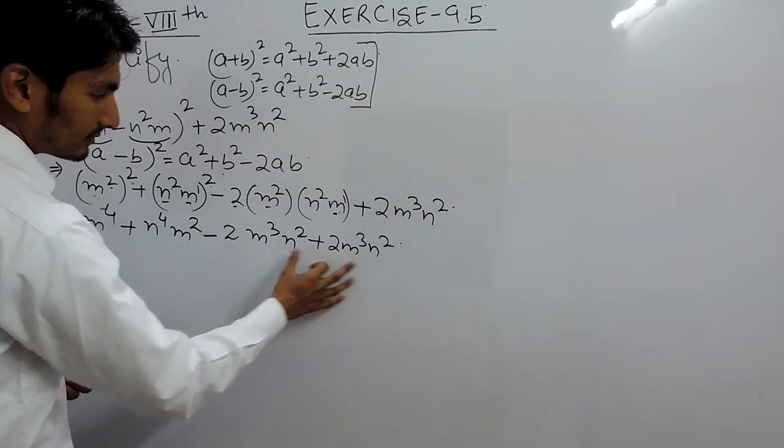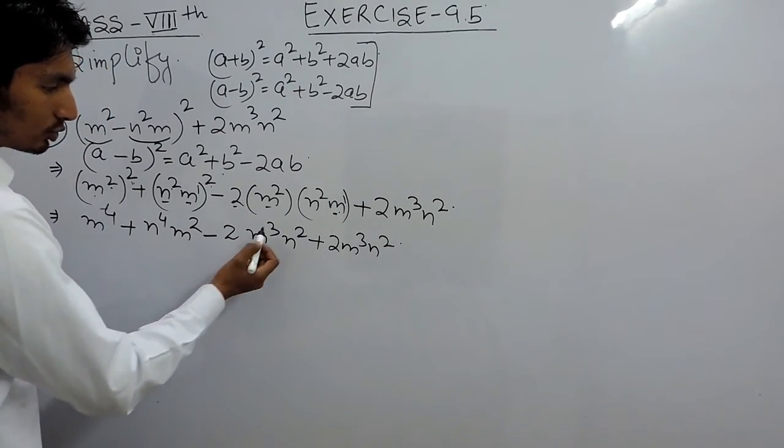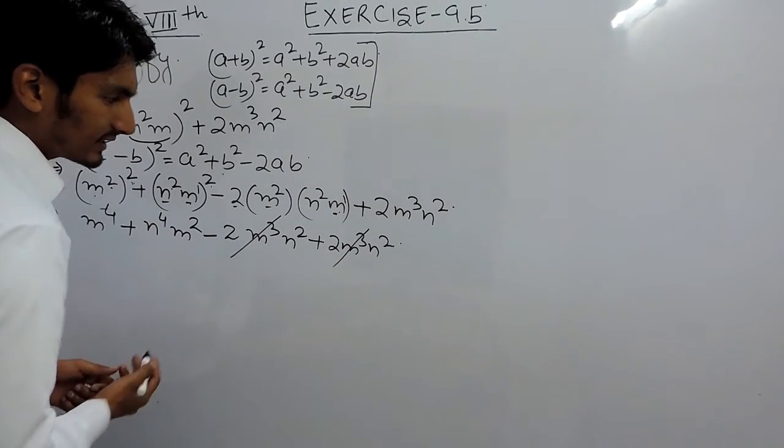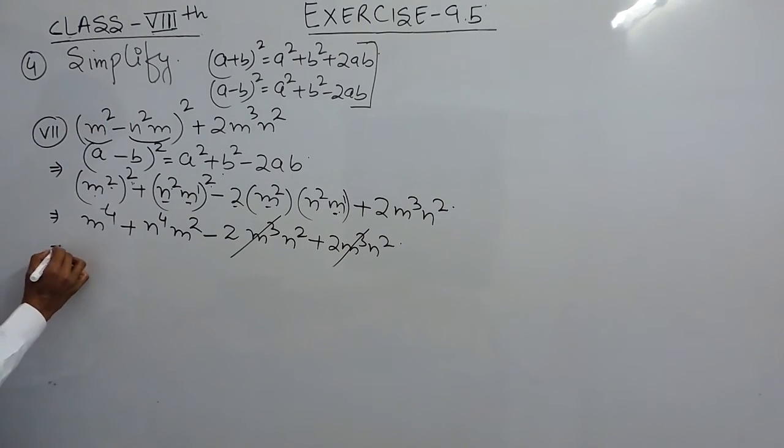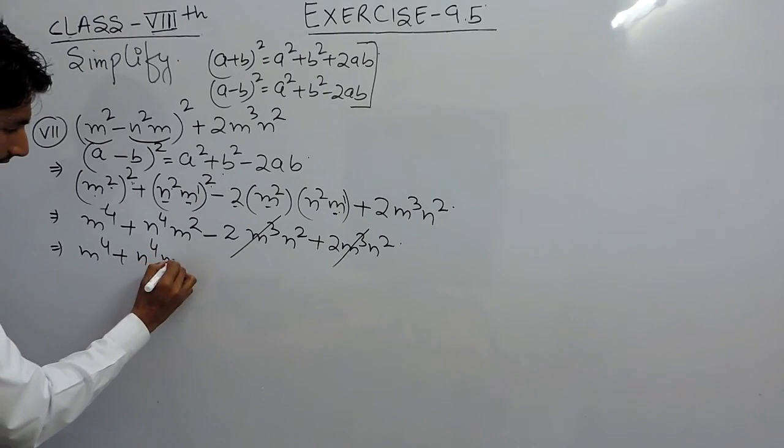Plus minus and these two terms are same, so can be cancelled out. The remaining one which is m⁴ + n⁴m² should be the answer for this seventh part.